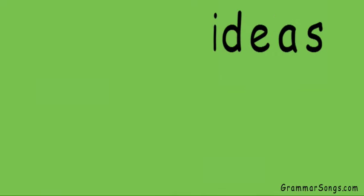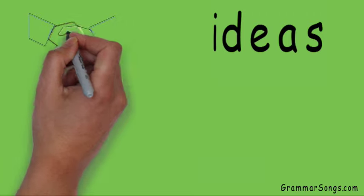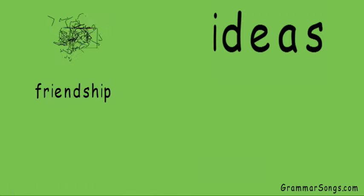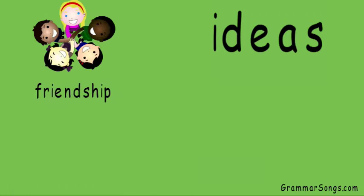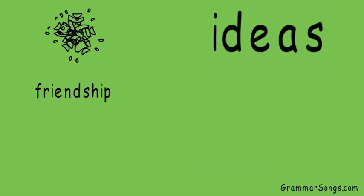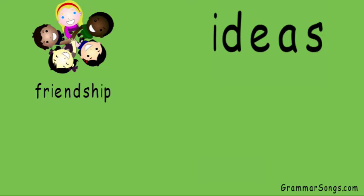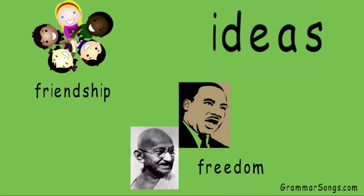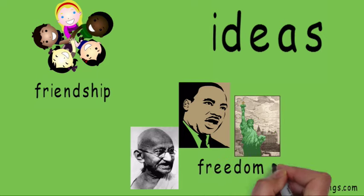Ideas are also examples of abstract nouns. You can't see, hear, smell, touch, or taste friendship itself, but you can enjoy spending time with your friends, who are people or concrete nouns just like you are. You can't see, hear, smell, touch, or taste freedom, but certain people or objects stand as symbols to express this abstract concept.